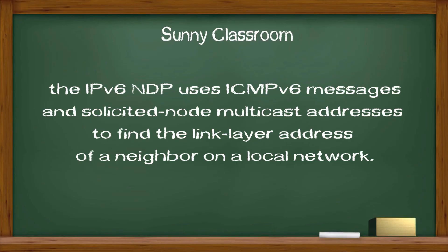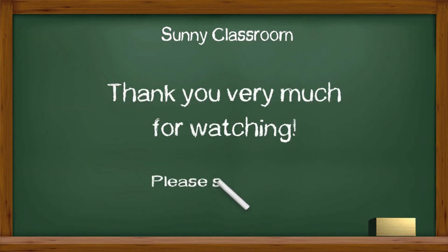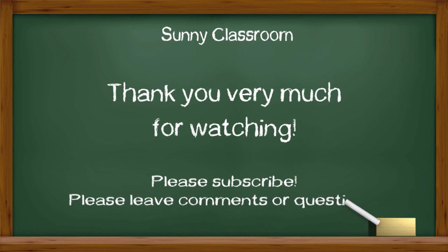In summary, IPv6 NDP uses Internet Control Message Protocol version 6 and solicited-node multicast addresses to find the link layer address of neighbors on a local network. I hope this video is helpful. Thank you very much and see you next time. Don't forget to subscribe.